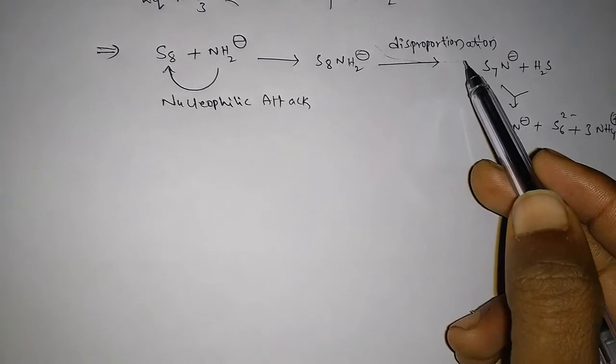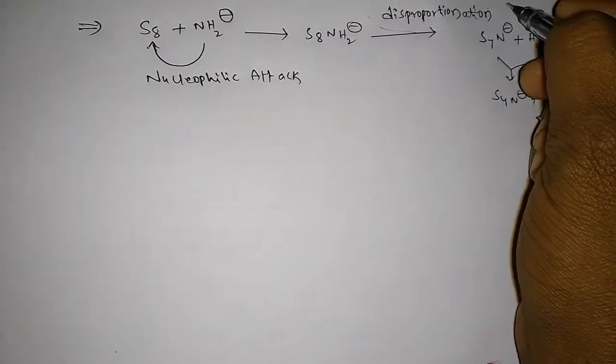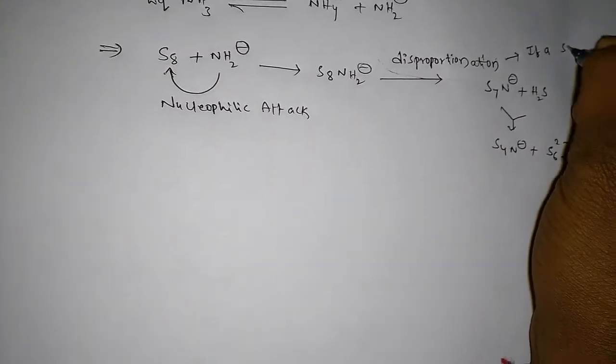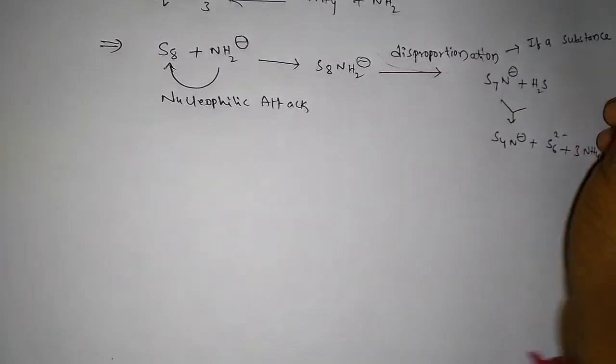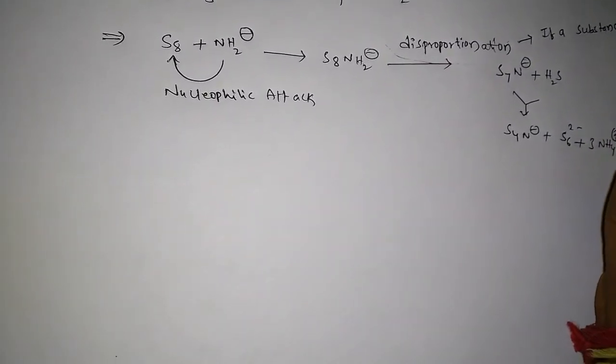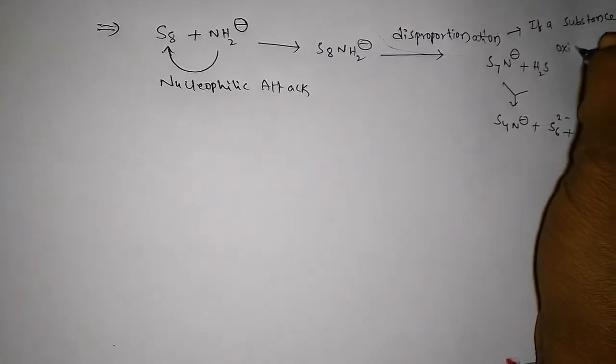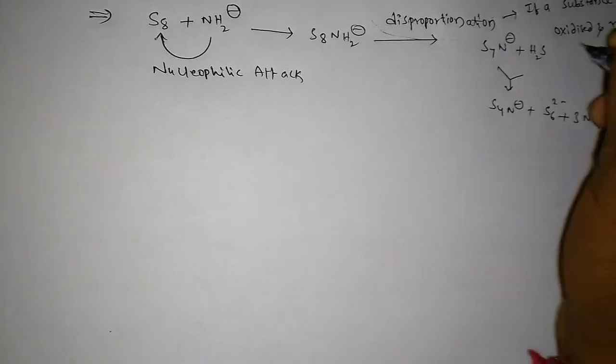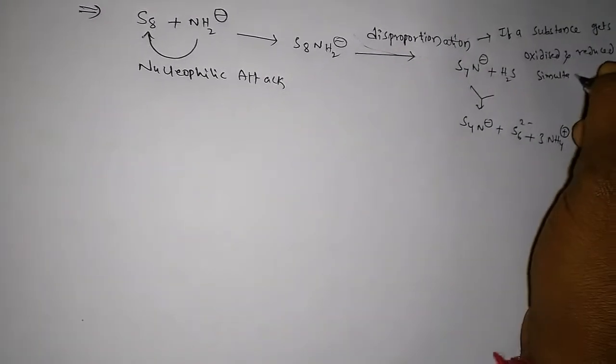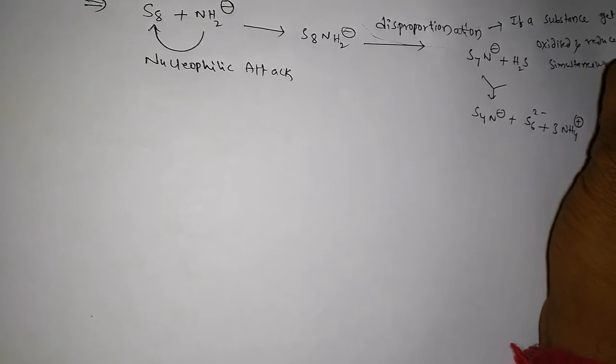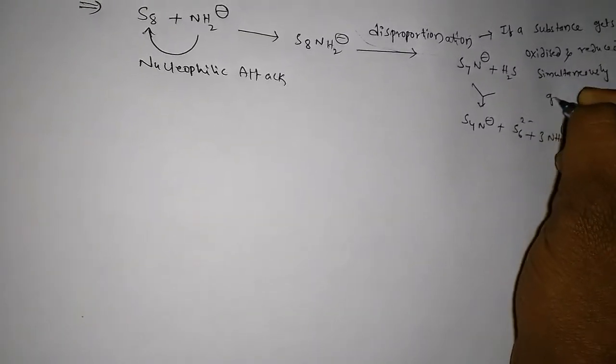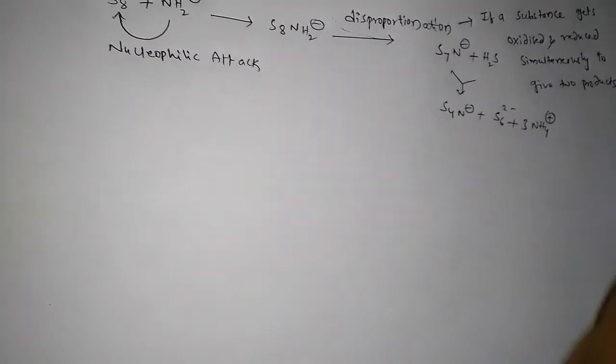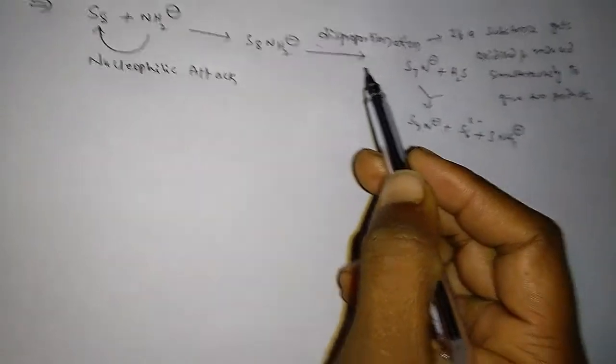So what is the meaning of a disproportionation reaction? Disproportionation means when any reaction, if a substance gets oxidized and reduced simultaneously to give two products, is simply called as disproportionation.